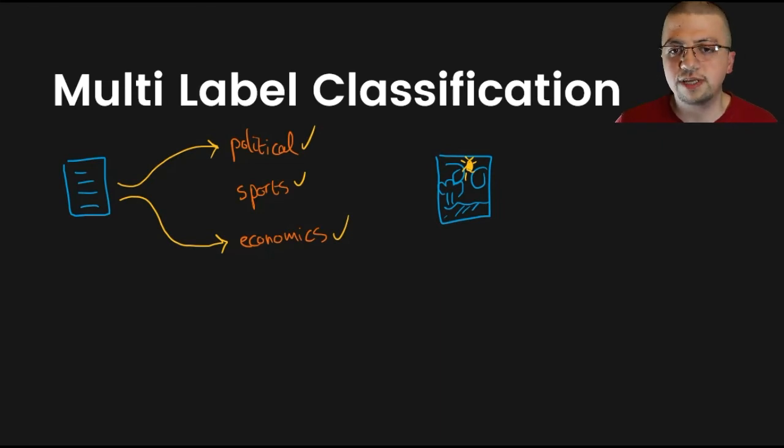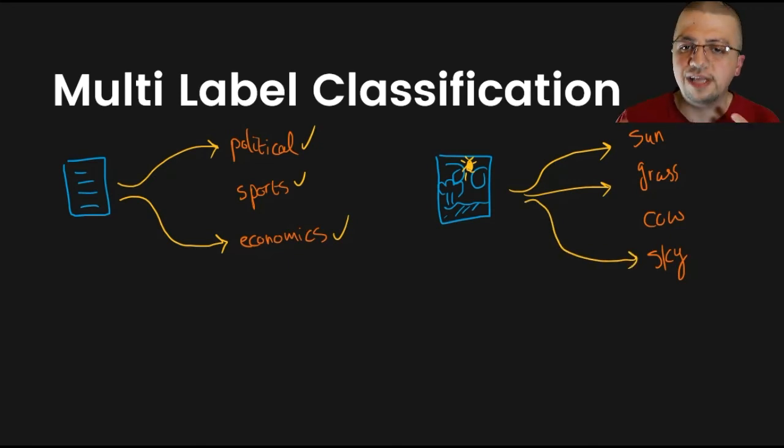So let's say the objects in your dataset - basically your class labels - are you could have sun, you could have grass, you could have a cow, you could have sky, and so on and so forth. So if you notice, we have the sun in this image, we have the grass, we don't have any cows, we have the sky. So again, multi-label classification problem.